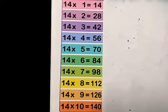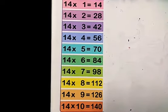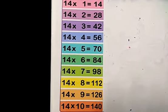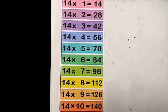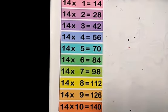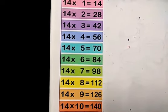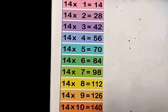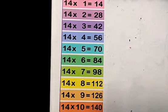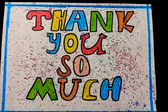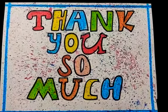Table of 14. 14 1s are 14, 14 2s are 28, 14 3s are 42, 14 4s are 56, 14 5s are 70, 14 6s are 84, 14 7s are 98, 14 8s are 112, 14 9s are 126, 14 10s are 140.